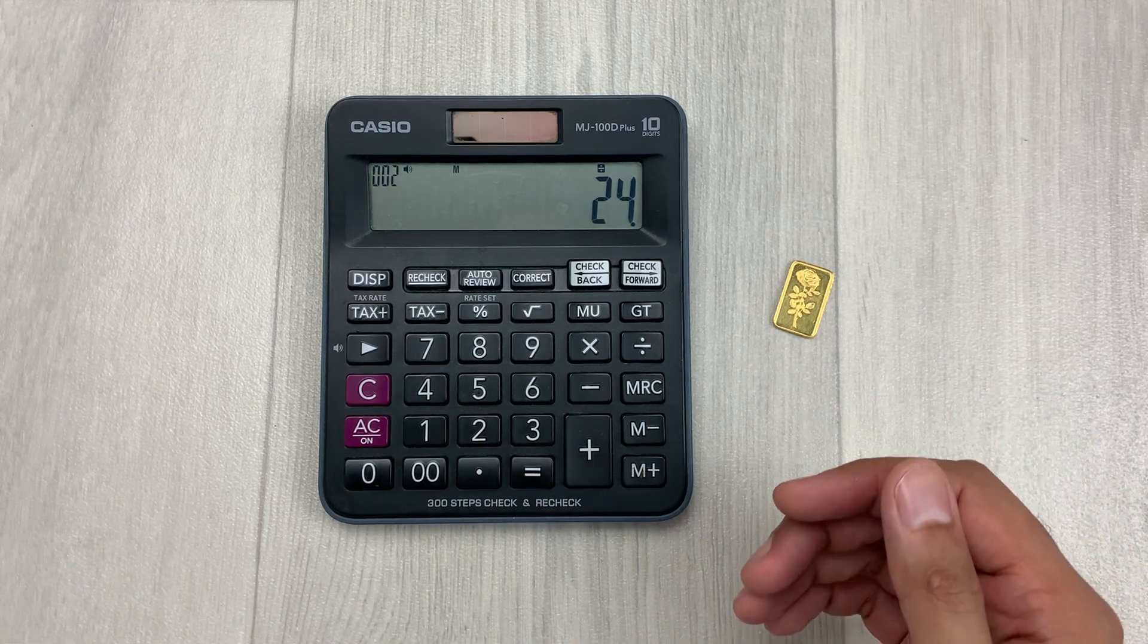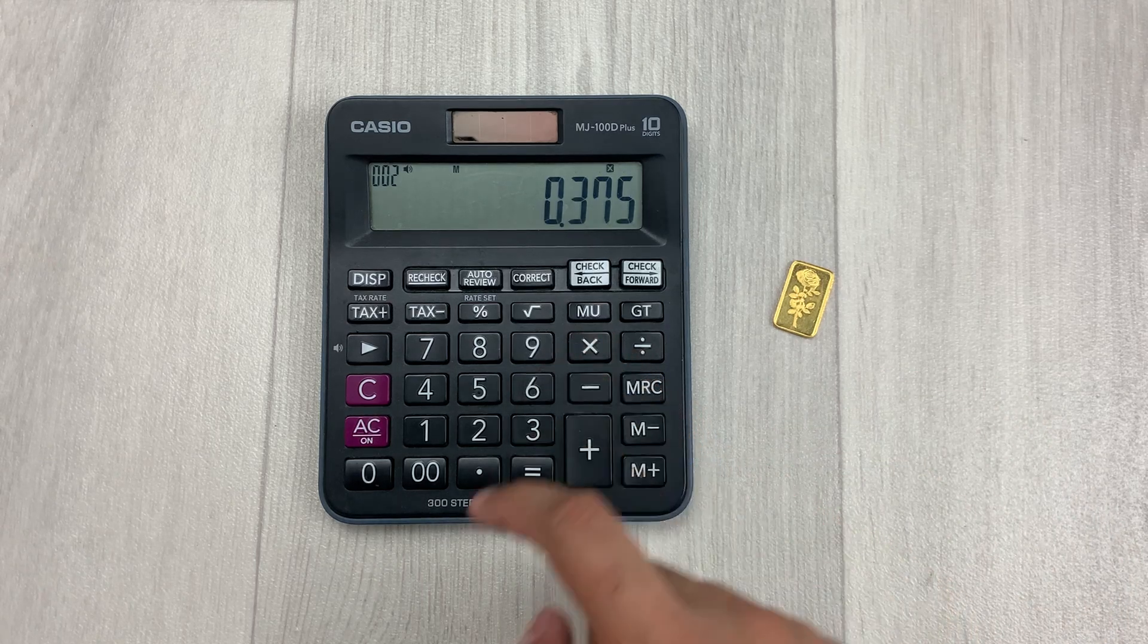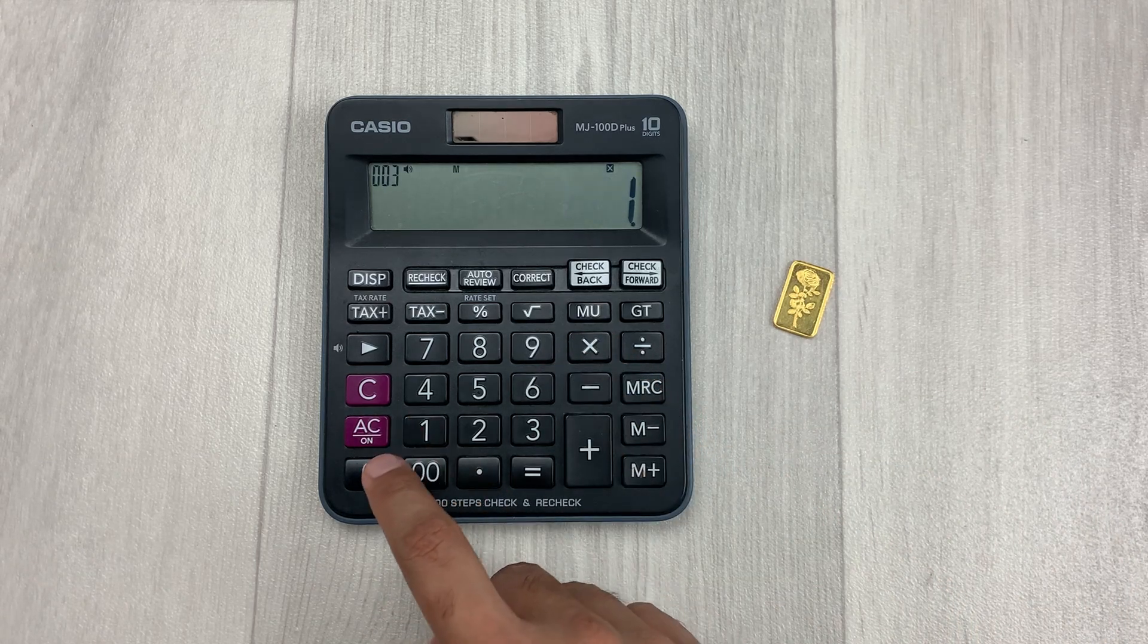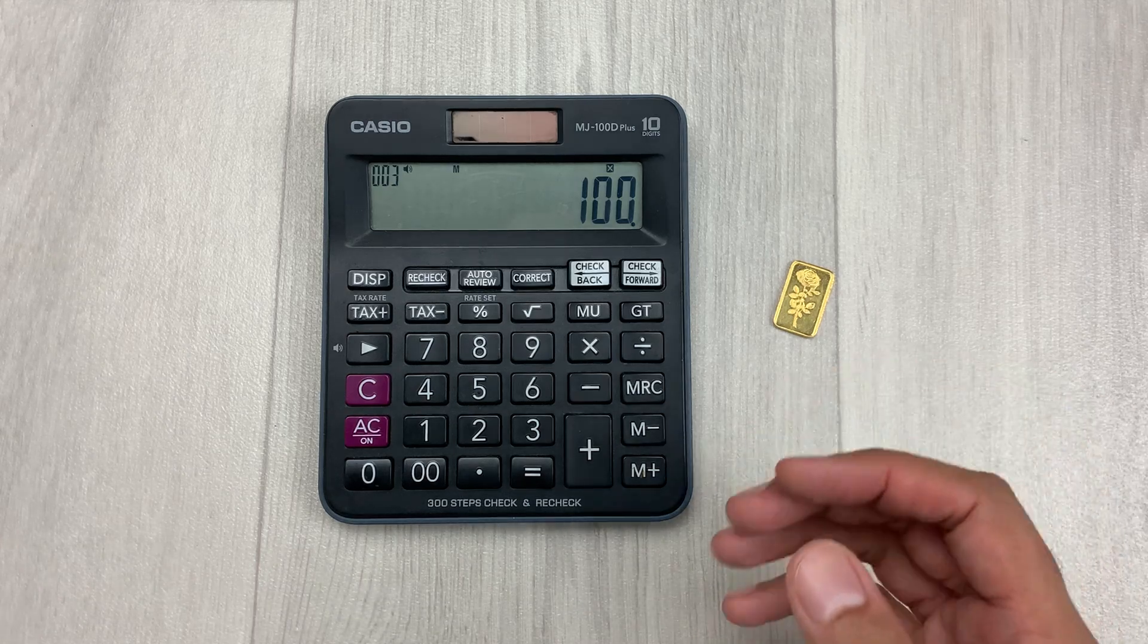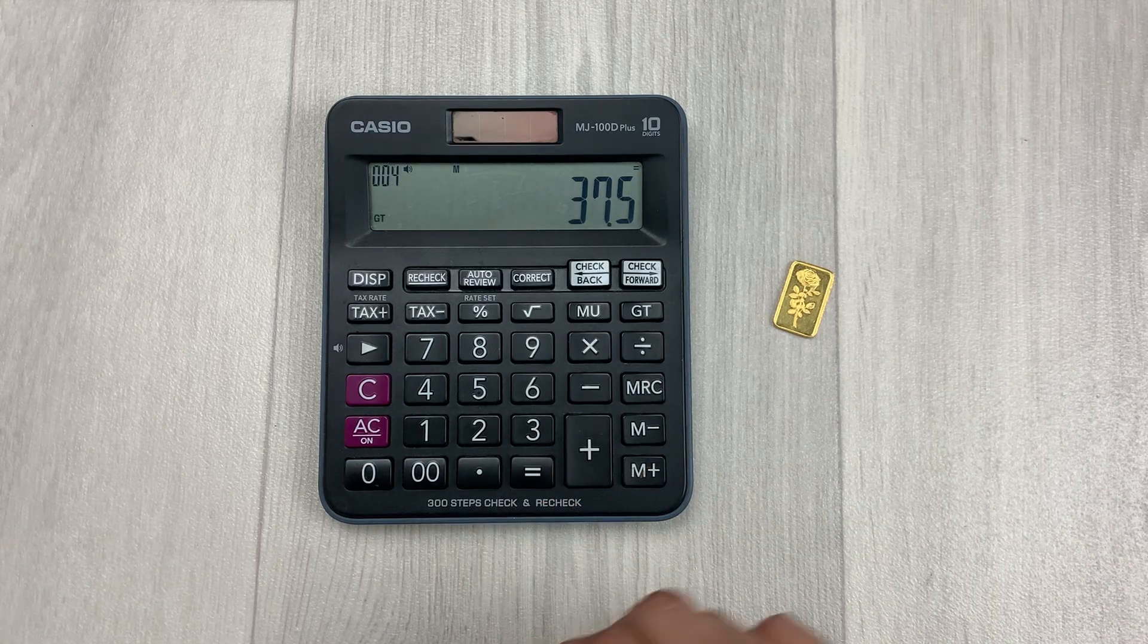And then in the next step, we will multiply it by 100. So we will press this multiply button and then we will type 100. And then in the last step, we will press this equal button.